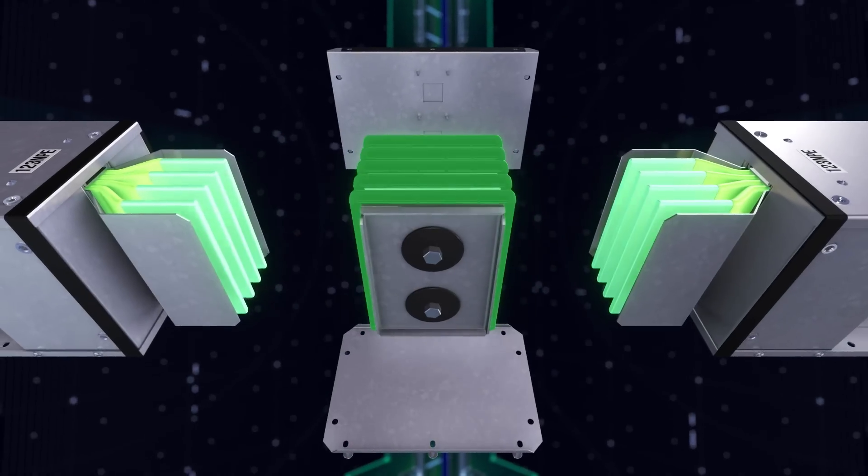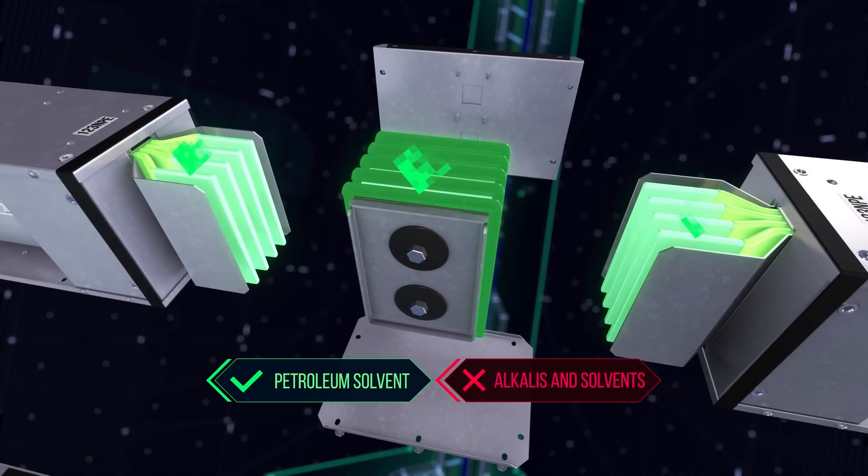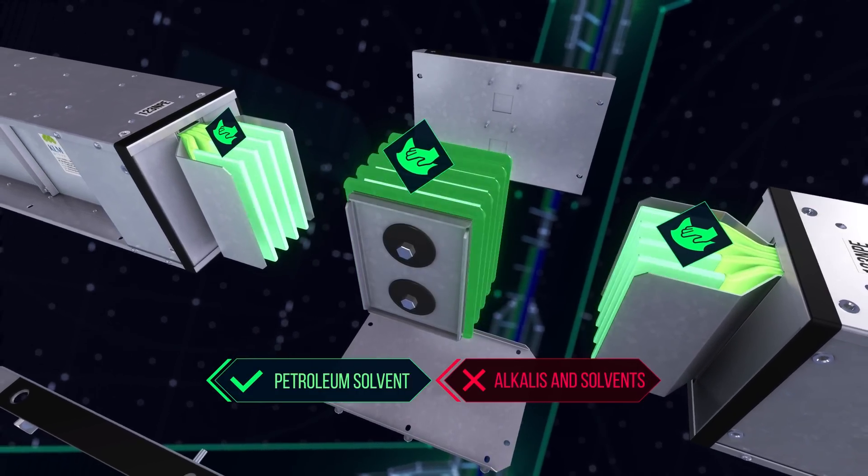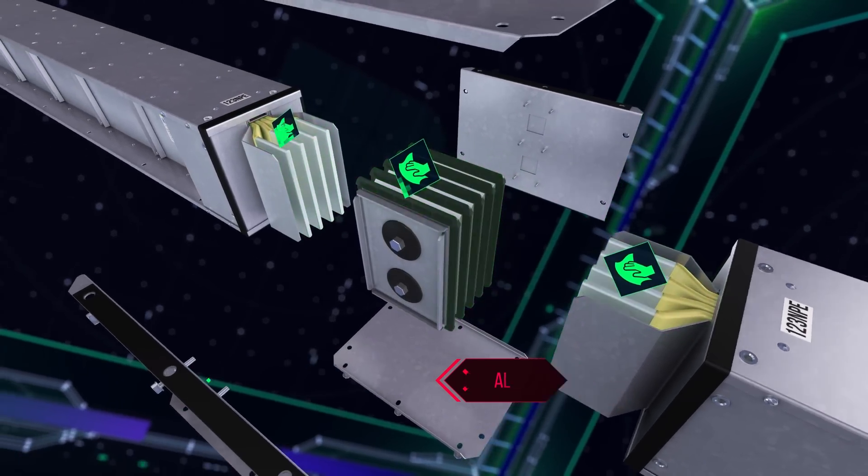Carefully inspect the current conducting parts of the bus bar trunking system sections and junction units. Clean them using a soft cloth and petroleum solvent or similar. Compounds containing alkalis and other solvents should not be used.